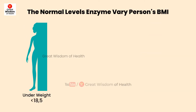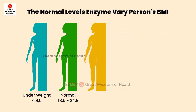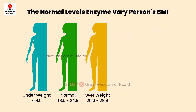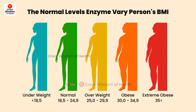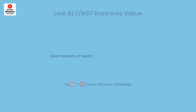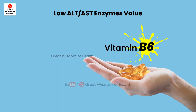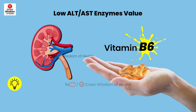Meaning of enzyme low, normal, and high levels. ALT and AST enzymes are measured in international units per liter. The normal levels vary based on a person's body mass index. They also depend on the lab's reference value or typical results.